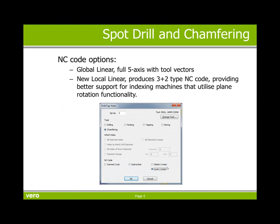There are now two options as to how we would like to output the entity code for a five-axis machine. This could be global linear, which is full five-axis with two vectors, or the new command which is local linear. This produces 3+2 type entity code and provides better support for indexing machines that utilise plane rotation functionality.